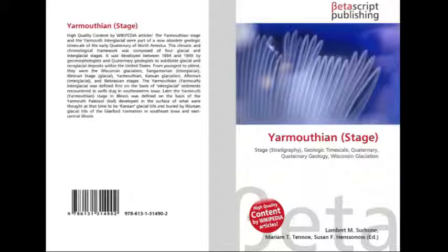Thus, the basic assumptions on which the Yarmouthian Interglacial, Kansan Glacial, Aftonian Interglacial, and Nebraskan Glacial nomenclature was originally defined was found to be lacking any scientific basis. As a result, this nomenclature was abandoned by quaternary geologists in North America and merged into the pre-Illinoian stage.